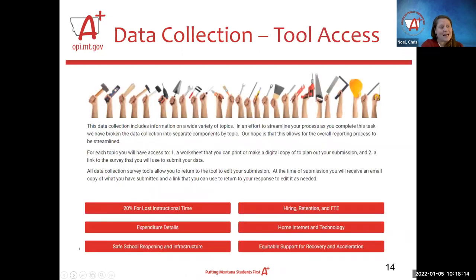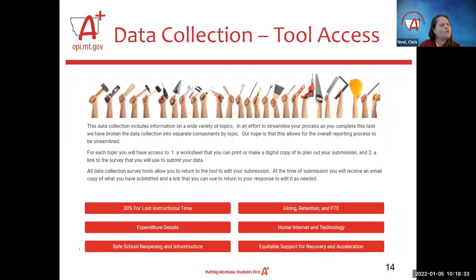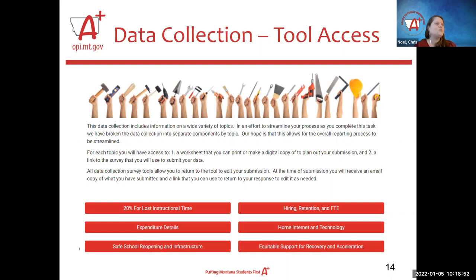The tool access page has six different tools corresponding to the six categories Jeff talked about. We took the federal document and asked ourselves in a very large district, who has this information? We tried to group the information into things where you could distribute them out — you could say to HR, we need help with this survey specifically; to your curriculum director, this survey specifically; to your clerk or financial team, that survey. You're not working with one enormous survey — we've done our best to parcel it out so you can distribute the work.